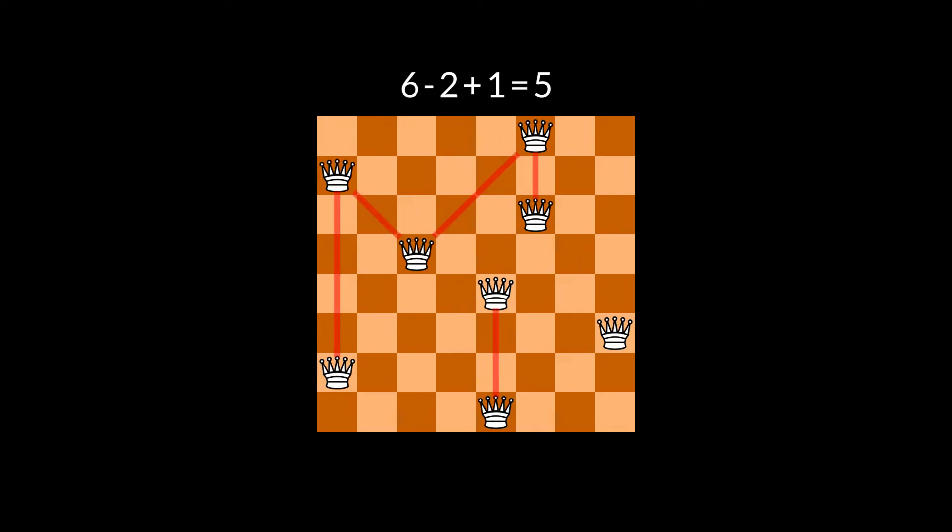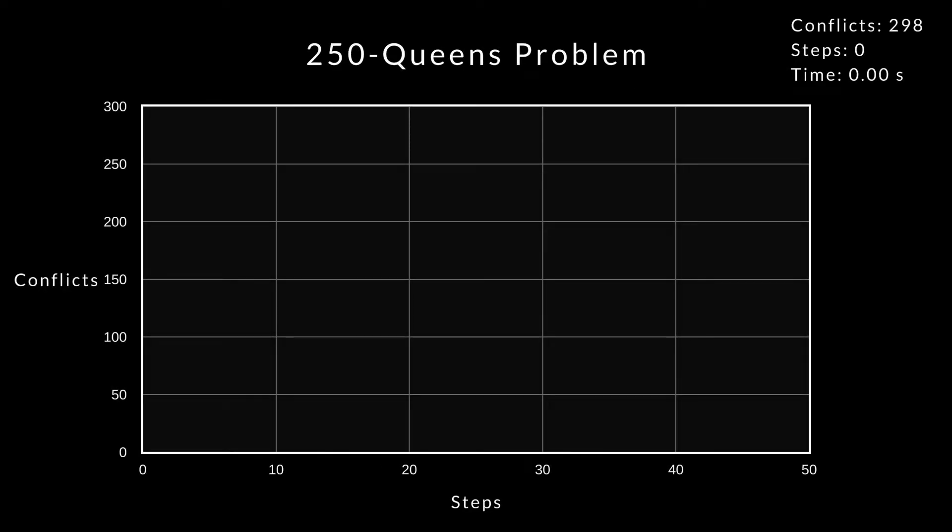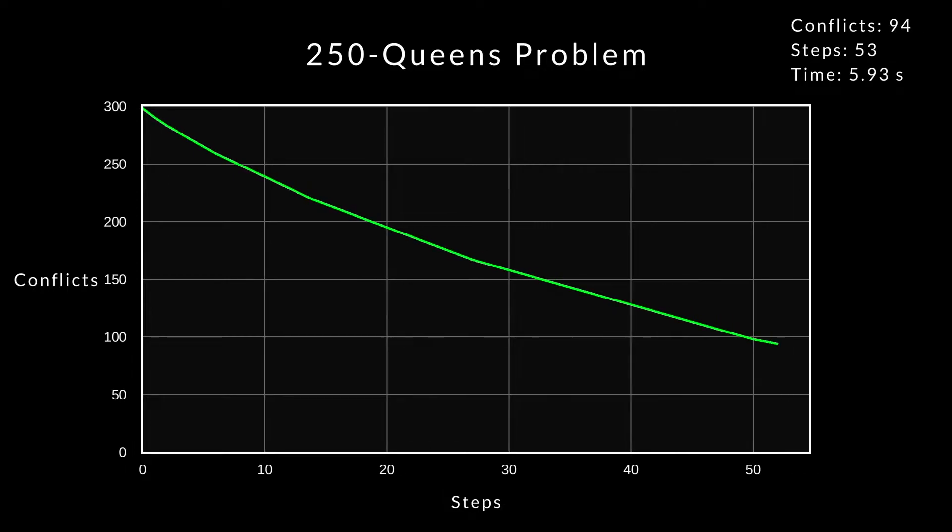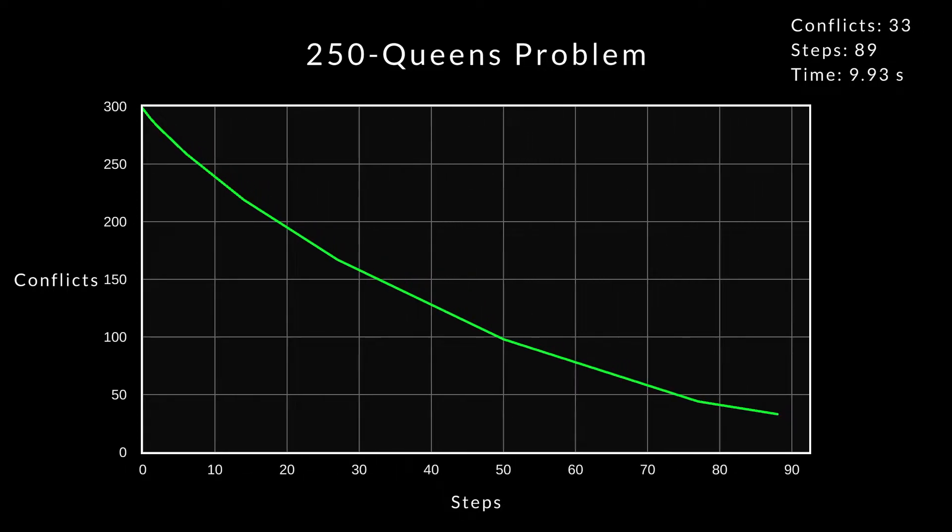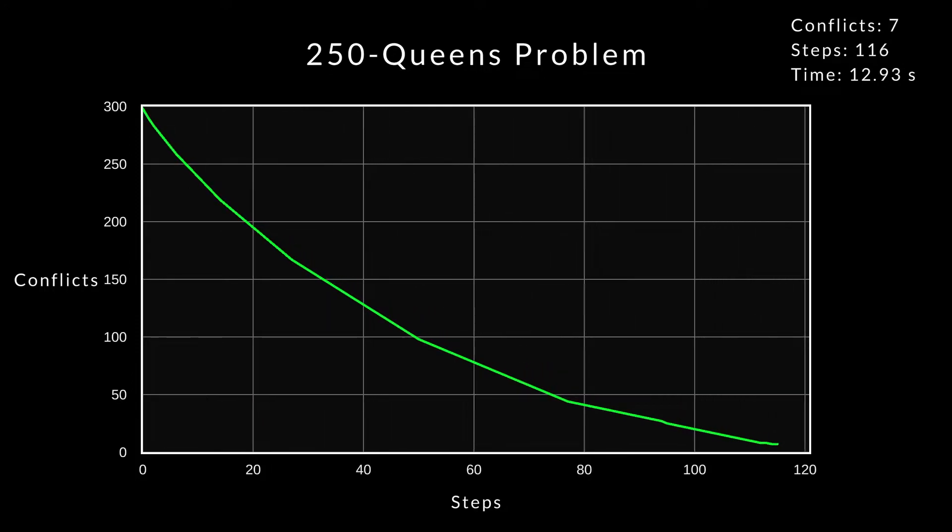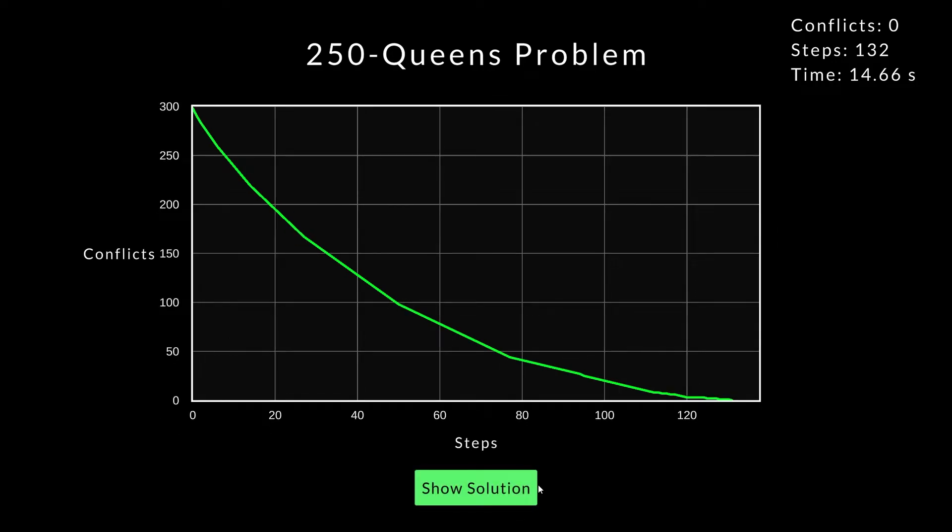This way of counting conflicts only takes big O of N time. Now what happens when we try to solve the 250 queens problem? It is much faster. We don't need anywhere near the same amount of patience.